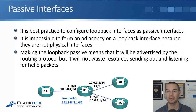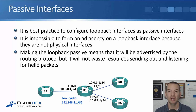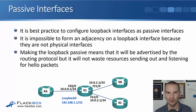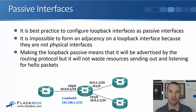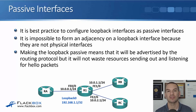It's best practice to configure your loopback interfaces as passive interfaces always. This is because it's impossible to form an adjacency on a loopback interface — it's impossible for another router to be directly connected to it because it's not a physical interface, it's logical. Making the loopback passive means it will still be advertised by the routing protocol, which we want. But we don't want to waste resources sending out and listening for hello packets when we know there's never going to be another router connected on that link. So always make your loopbacks a passive interface.